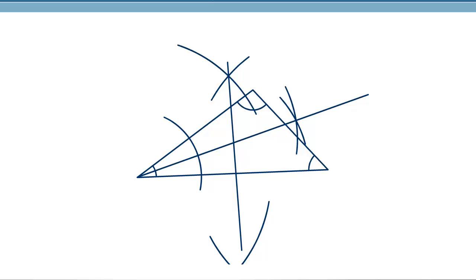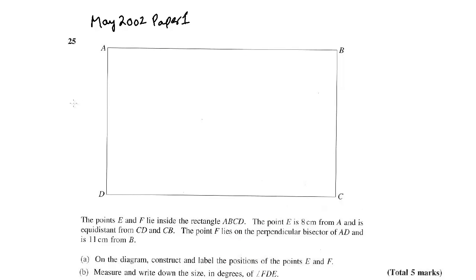A common follow-up question is to mark a point X which is both equidistant from B and C (on the perpendicular bisector) and also equidistant from lines AB and BC (on the angle bisector). The answer is always the point of intersection of the two loci. This is quite a difficult question compared to usual exam questions. We need to find point E which is 8 cm from A — that locus is a circle.